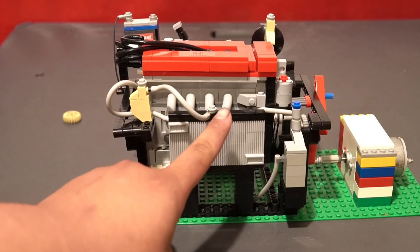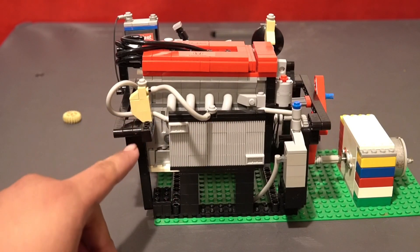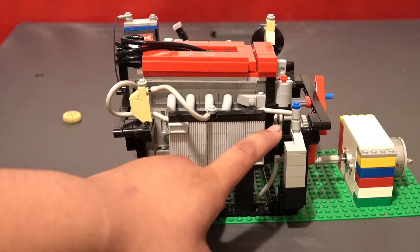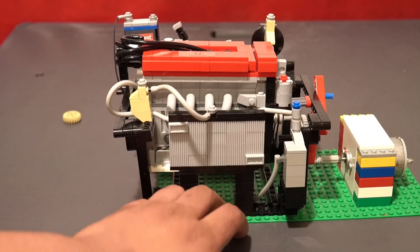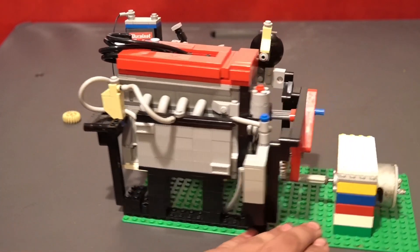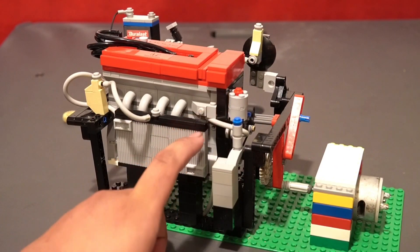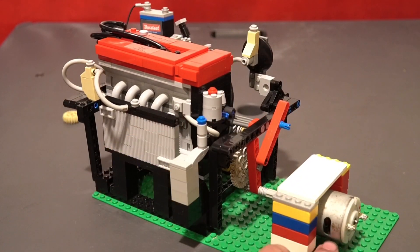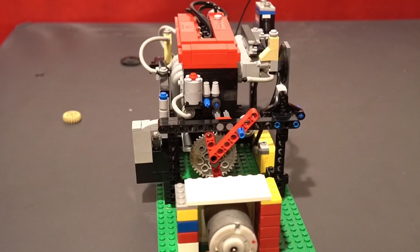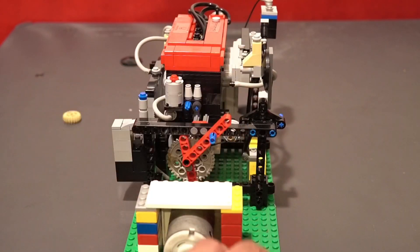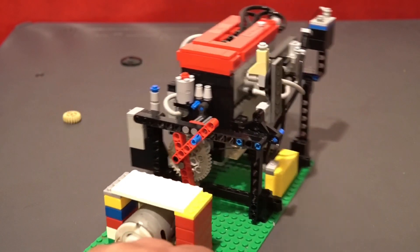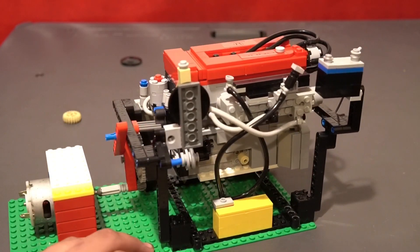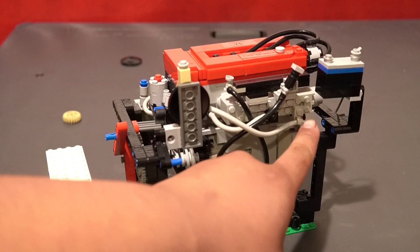Radiator, radiator cap and the radiator overflow. To the right is a windshield washer fluid reservoir. Behind that is the power steering pump with the power steering return line. Under that is the pulley for the power steering pump. We have the brake booster. Now the brake booster is given its power via the vacuum line that's coming from the intake manifold.